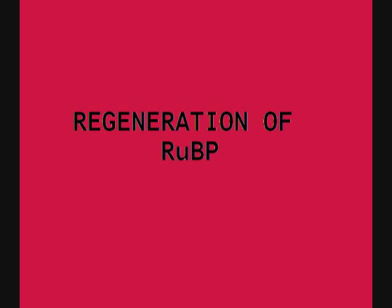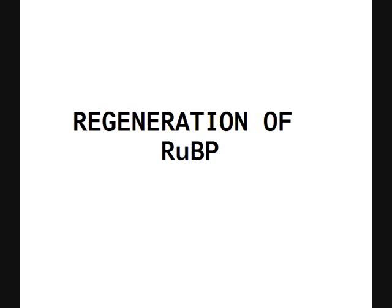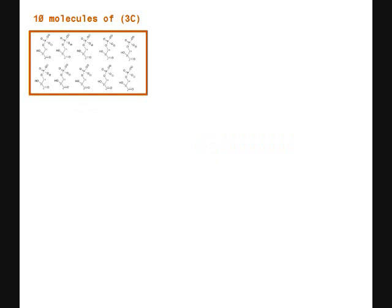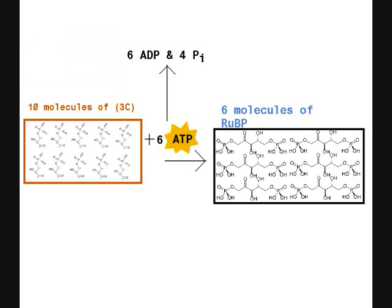Phase 3 is the regeneration of RuBP. The 10 molecules of glyceraldehyde 3-phosphate which have entered Phase 3 react with 6 molecules of ATP to form 6 molecules of ADP, 6 molecules of ribulose 1,5-biphosphate (RuBP), and in the process release 4 phosphate ions.